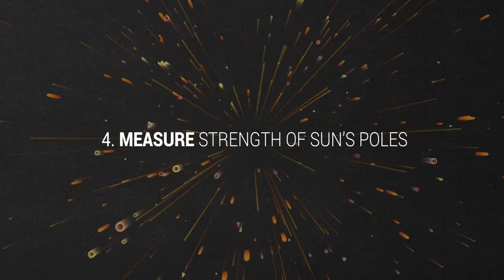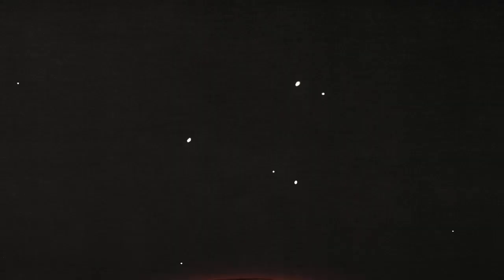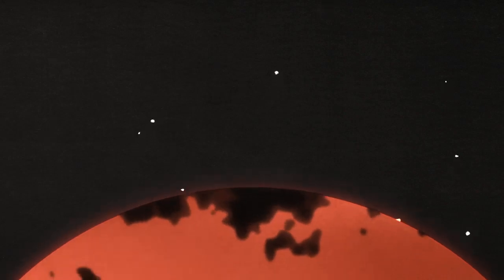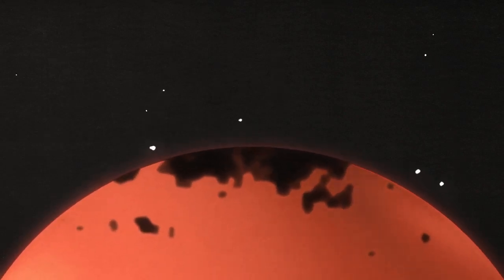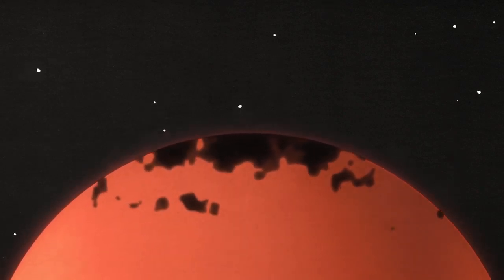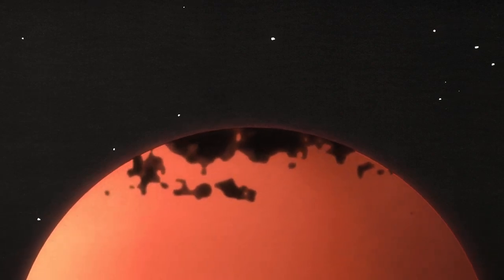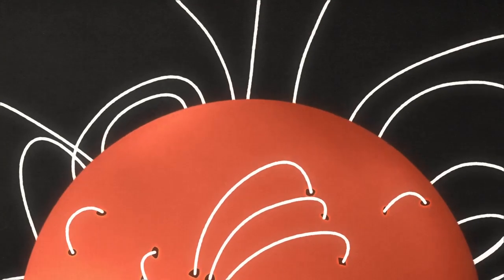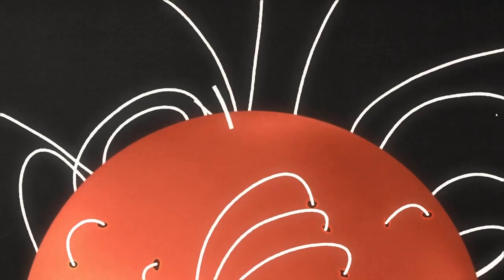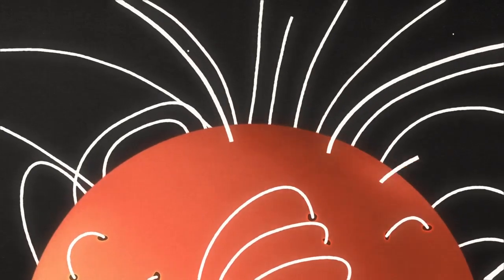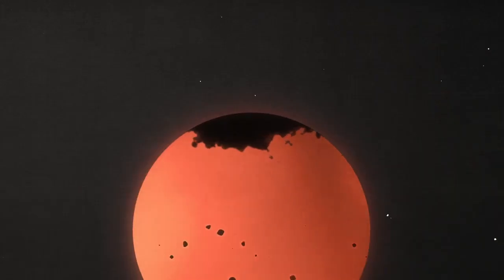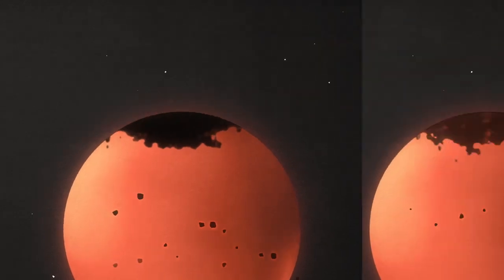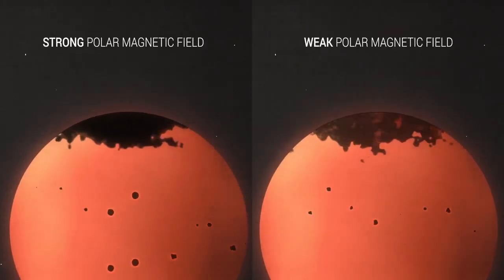The strength of the sun's poles during solar minimum can help predict how active the next cycle will be. After the poles have reversed at the peak, scientists keep a close eye on it for the next few years. If the magnetic fields accumulated at the poles become strong during this time, it's likely the next solar cycle will be an active one. If the buildup is weak, the next solar cycle won't be as active.